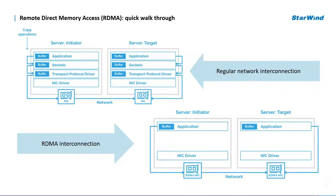As you can see, the regular network interconnection has a large sequence of copy operations. All of these operations require additional resources and increase data transfer latency. In return, the lower diagram demonstrates data movement with fewer transitions by implementing a transport protocol into the network interface card hardware. So RDMA makes it possible to read data directly from the main memory of one host and write that data directly to the main memory of the other.